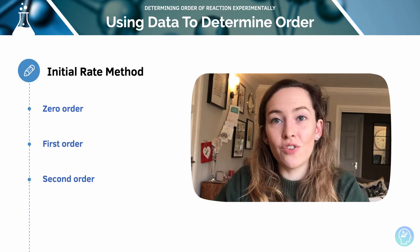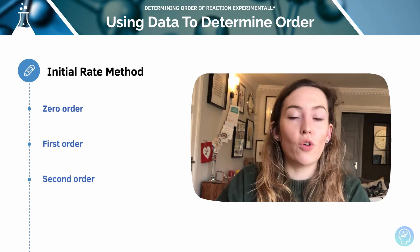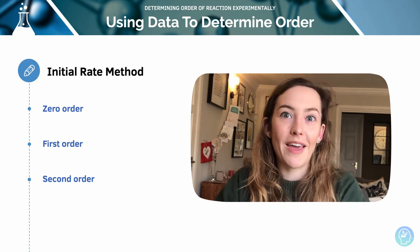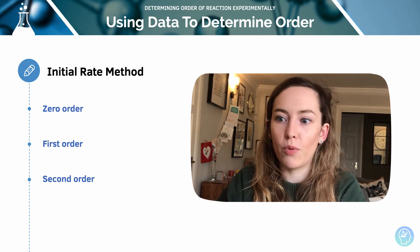And then if it's second order, if we double the concentration, then the initial rate is quadrupled. Again, two to the power of two, for example, so four.